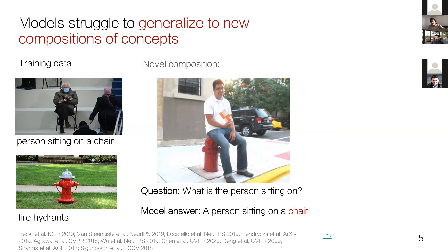These visual models struggle because they are unable to generalize when they see novel compositions of previously seen concepts. For example, even if they've seen fire hydrants and people, these models learn to cheat—they end up ignoring entire regions of the image, predicting that the person is sitting on a chair instead of a fire hydrant, because most training instances of people sitting involve chairs.